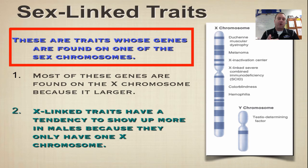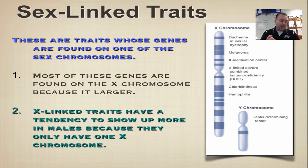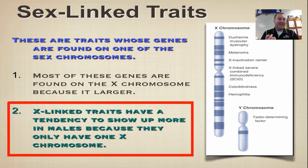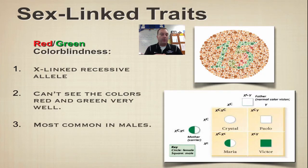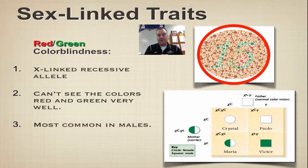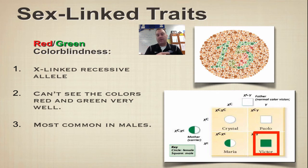Sex-linked traits are traits found on a sex chromosome, and typically it's going to be the X chromosome because it's so much bigger than the Y chromosome — it has room for genes that have nothing to do with being male or female, just genes a human being would use. A key feature of sex-linked traits is they're usually recessive, and sex-linked recessive traits are inherited more often by males because they only have one X chromosome. An example is red-green colorblindness, where you can't see the green 15 in the test circle. This is X-linked recessive and shows up in males more often. In the Punnett square, the only colored-in individual is male, but females can be carriers. Males can never be carriers with an X-linked recessive trait.